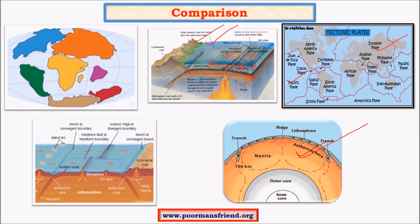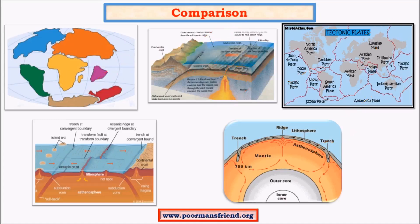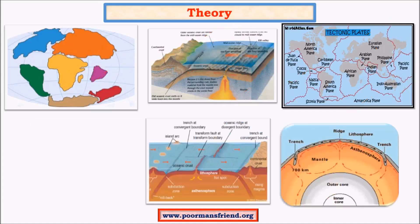Sea-floor spreading was suggested by Harry Hess, whereas plate tectonics was suggested in the 1960s by many scientists. With the introduction of sea-floor spreading and plate tectonics, the theory of continental drift was discarded for being too general in nature and not backed by well-supported scientific evidences.